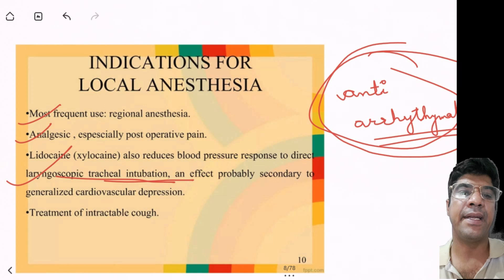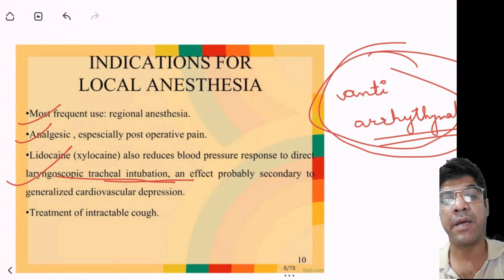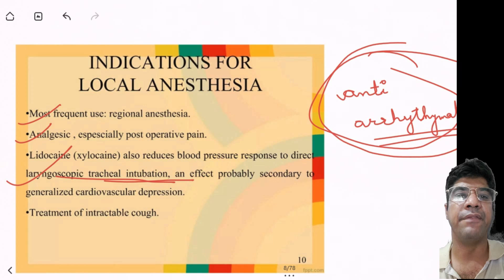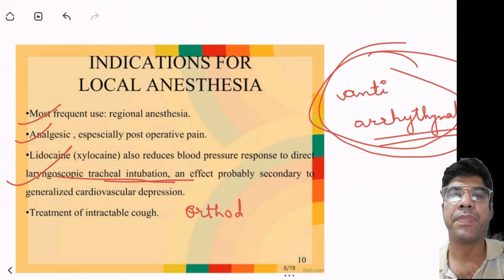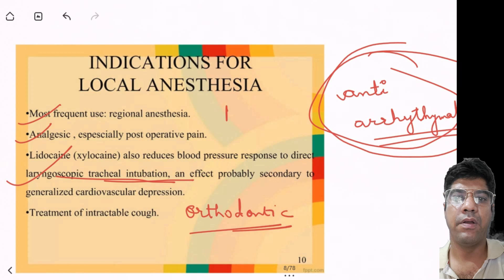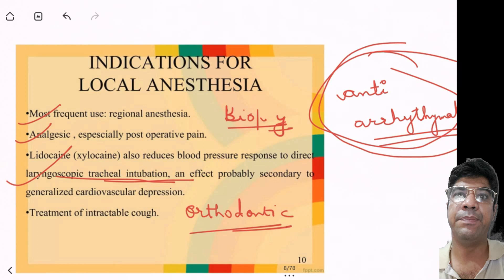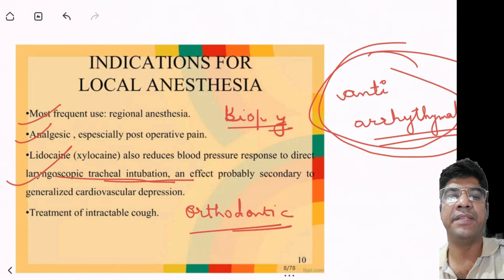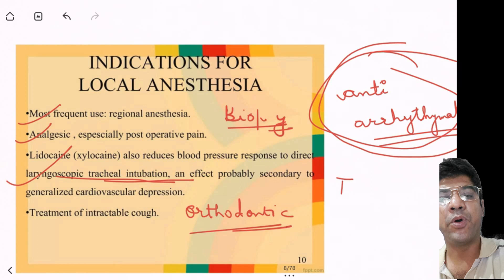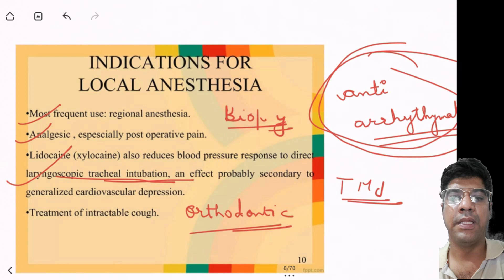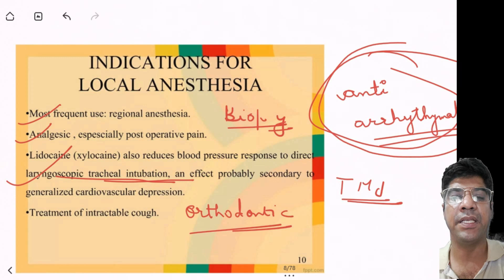While lignocaine acts as a local anesthetic, it can also indirectly influence cardiovascular parameters by reducing the body's reaction to discomfort and stimulation. Other indications include orthodontic procedures while adjusting braces, or in biopsy procedures to diagnose oral lesions or abnormalities, where local anesthesia could be given to the biopsy site. Treatment of the temporomandibular joint disorder is another indication where injection of local anesthesia may be used into the jaw joint to relieve pain.